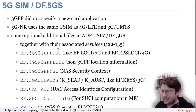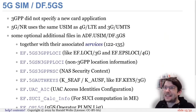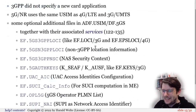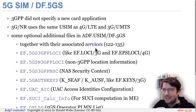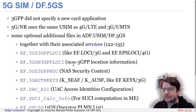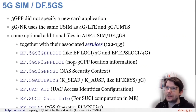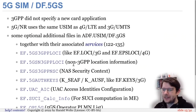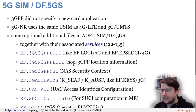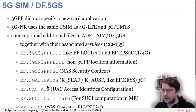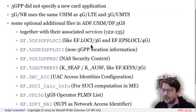The 5G dedicated file: unlike for IMS, 3GPP did not specify a new card application for 5G. The same USIM is reused. Instead, there's a new dedicated file DF.5GS underneath ADF.USIM, containing new optional files. Those files have corresponding service entries in the USIM service table to indicate whether they're present.